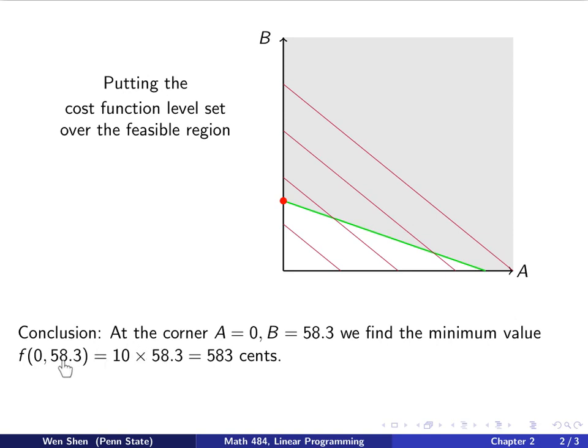So A is 0, B is 58.3, so I just have 10B, which gives me 583 cents. So that is the solution for the mathematical problem.